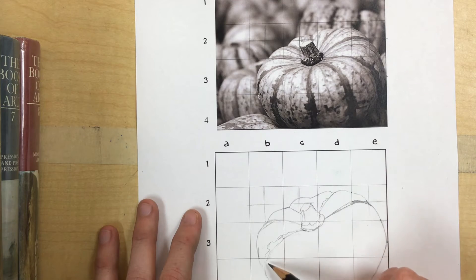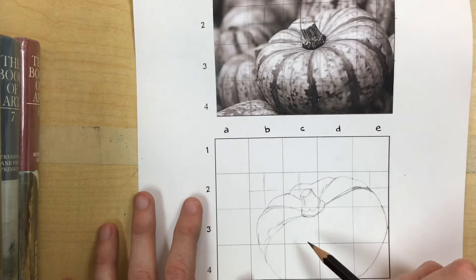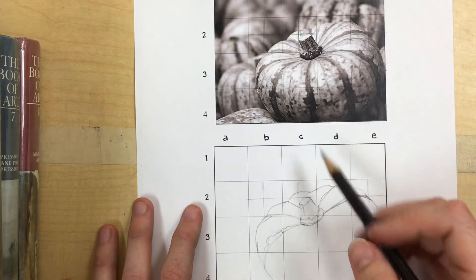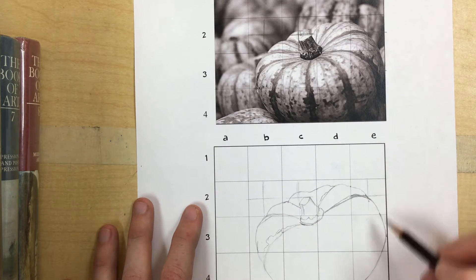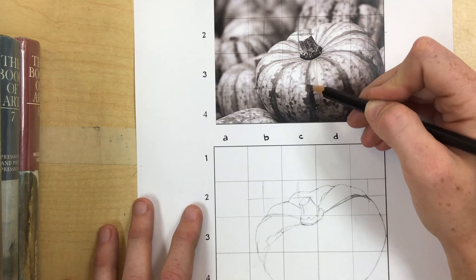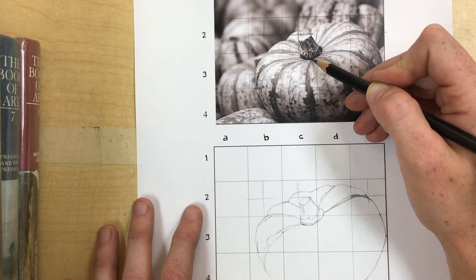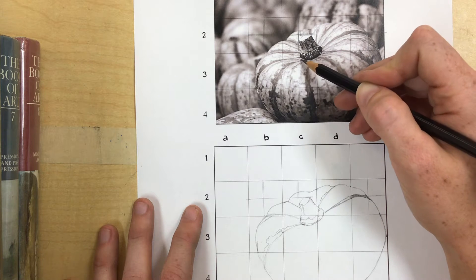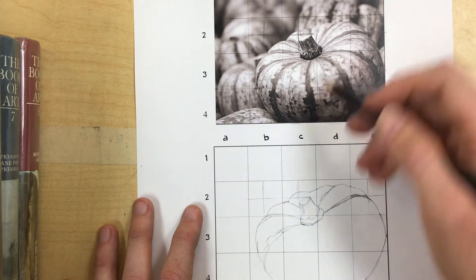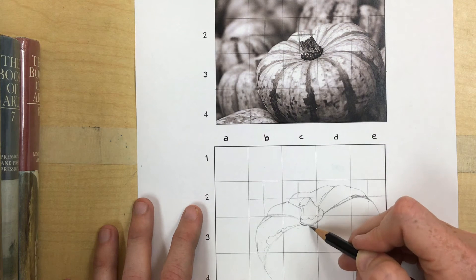So you start by drawing the bigger shapes and then you're going to work towards the smaller details. So I kind of have like the big shapes. Now I need to start getting the contours. Like I have this kind of stripe that goes down.